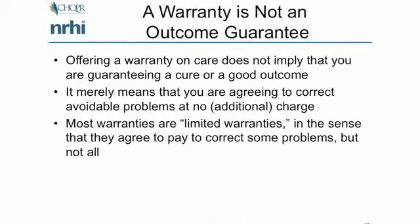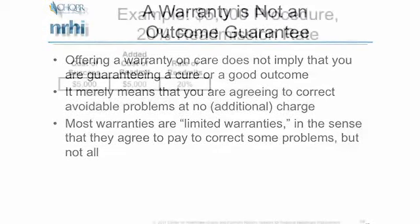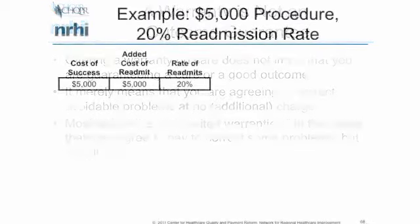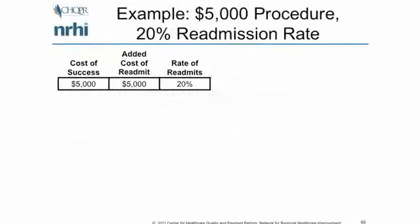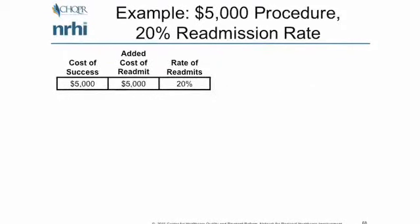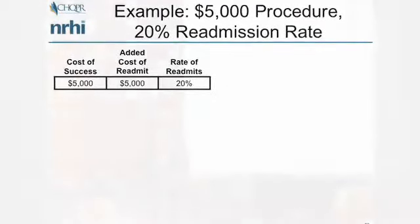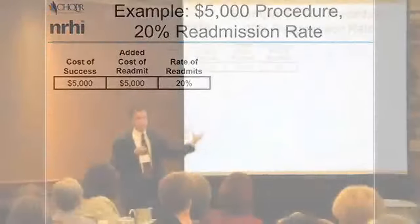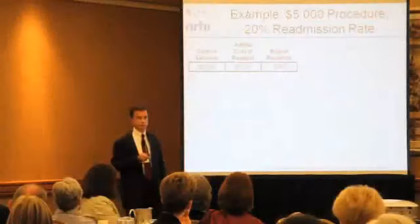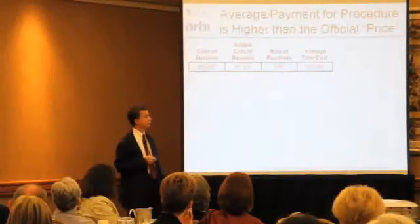Let me give an example of how this works. Suppose we have some patient condition coming to the hospital costing $5,000, and 20% of the time they get readmitted. And it costs another $5,000 whenever they do.